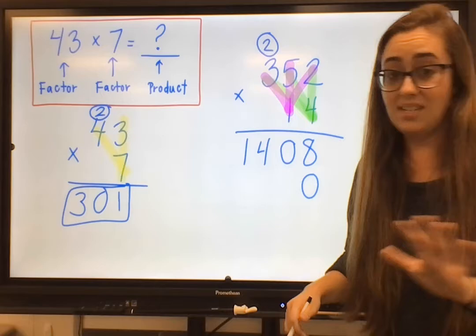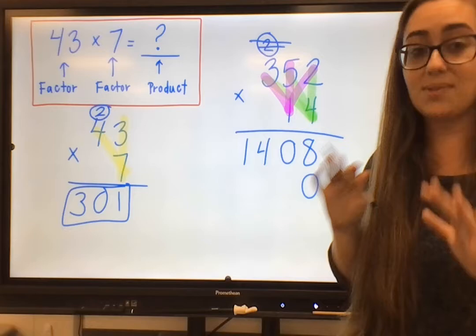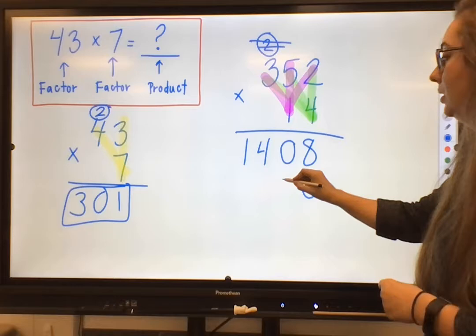Now this 2 was from the step prior. It doesn't apply to this part. So you can either erase it. I always just put some slashes through it to cross it out so I don't think about it for this next step.